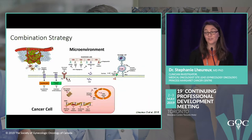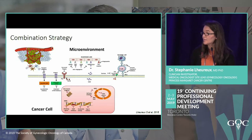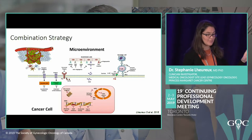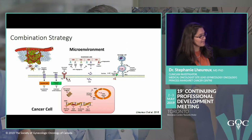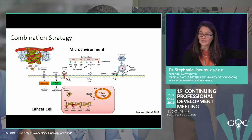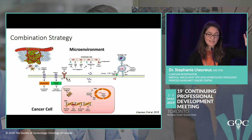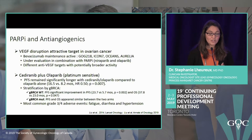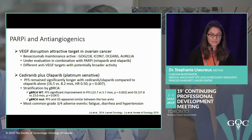One strategy to overcome resistance is combination therapy. Targeting different pathways simultaneously — DNA, cell cycle, microenvironment, angiogenesis, or immune cells — may prevent resistance. PARP inhibitors combined with anti-angiogenics is a major area of investigation, given that ovarian cancer has high VEGF expression and anti-VEGF therapy is already proven effective in ovarian cancer.